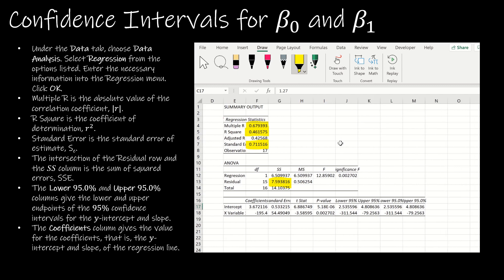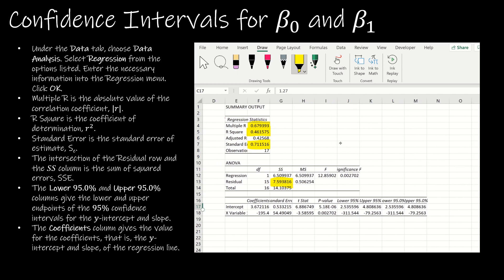I'm going to slide over just a little bit. The Lower 95 and Upper 95 values give the confidence interval for the y-intercept and for the slope, which is just called X variable.